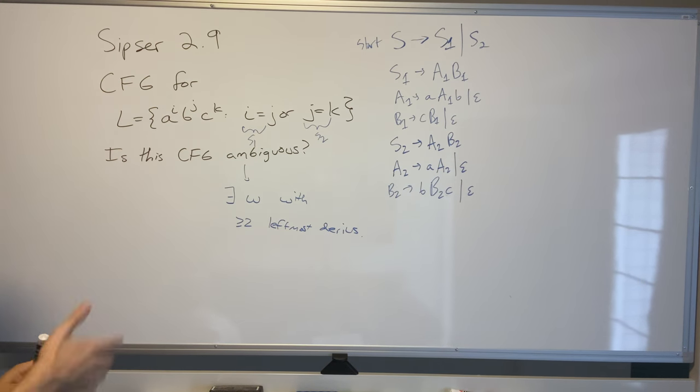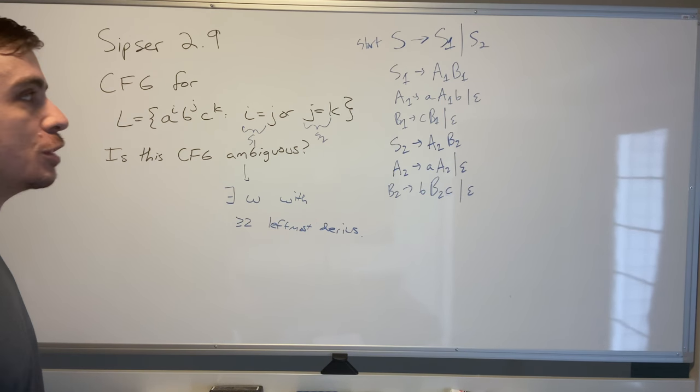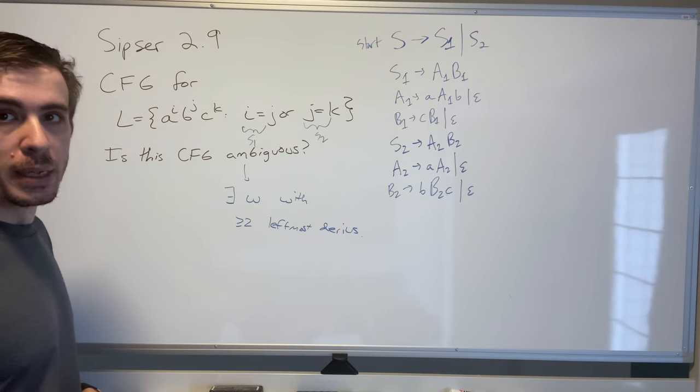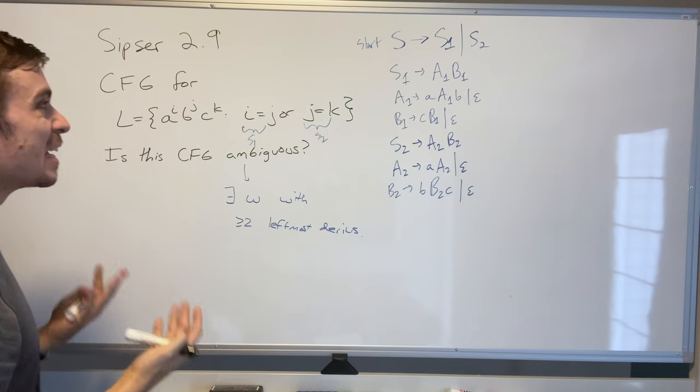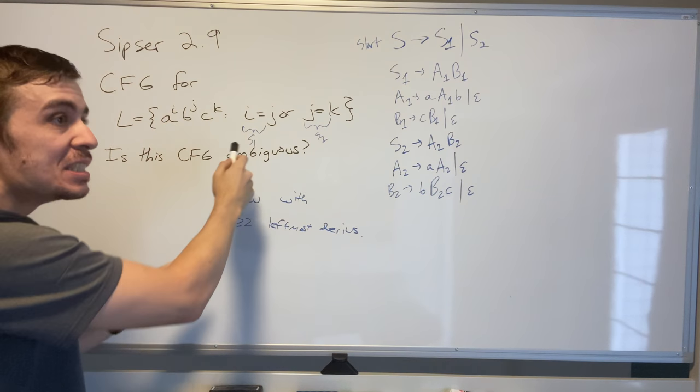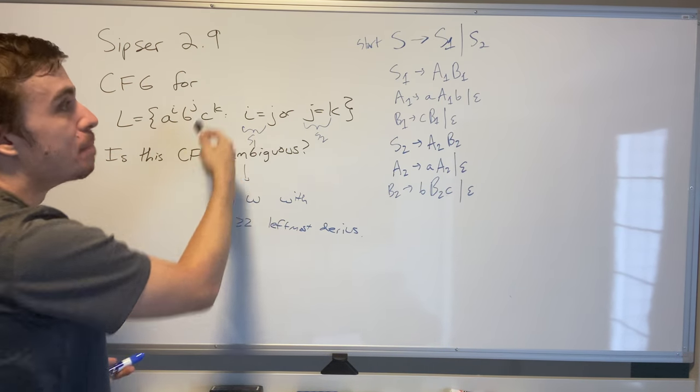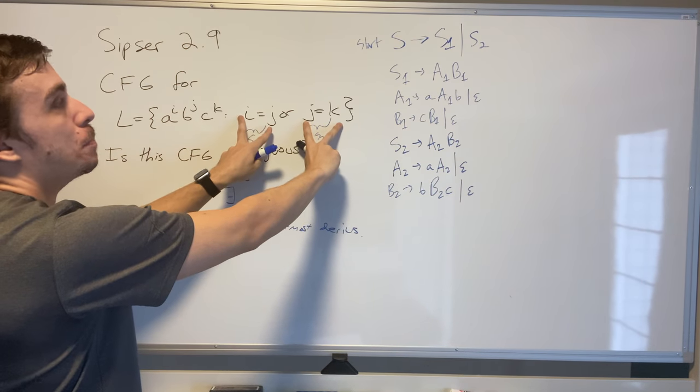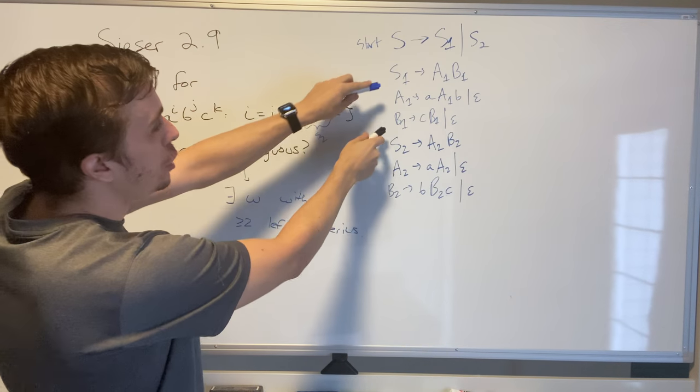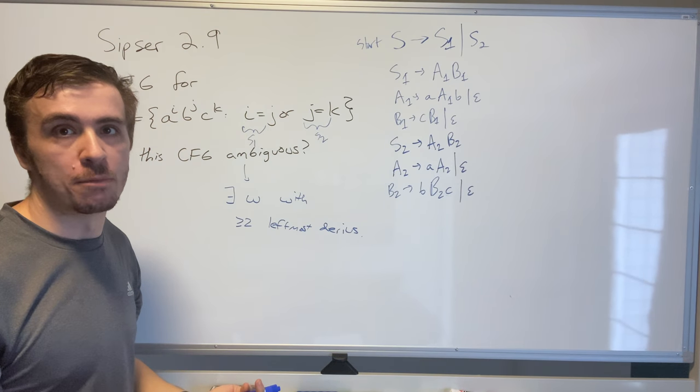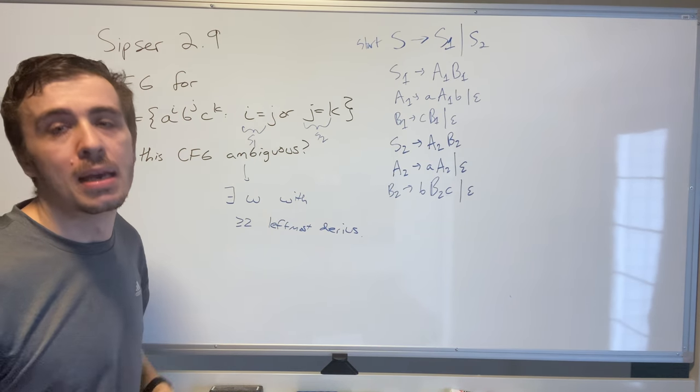What string can we derive in two different ways? Well, if we look at the language here, we see that there are two different parts to it and there's some overlap. If we take any string at all where we have the same number of a's, b's, and c's, the left side must be able to generate it and the right side must be able to generate it because it satisfies both of these.